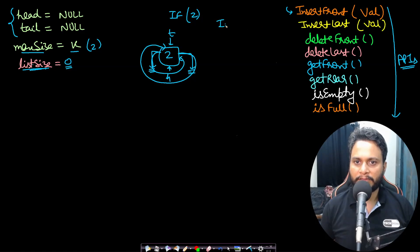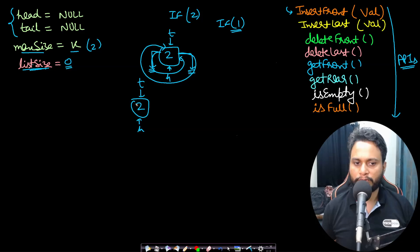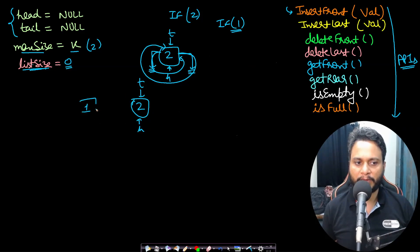Now if another call comes in — insert front of 1 — we currently have node 2, which is both the head and the tail. We will make a new node 1. By default the next and previous pointers of the new node will be null.